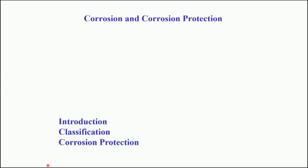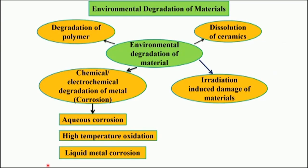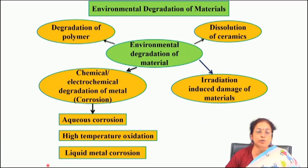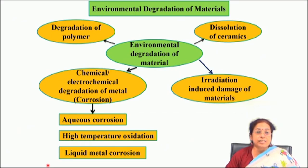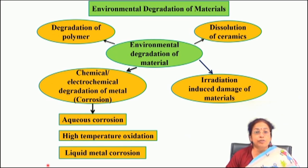Hello, we are going to start the degradation of materials because of corrosion and its protection. Corrosion is a kind of environmental degradation of materials. If you go through different types of degradation due to interaction with the environment, for polymers the term used is degradation, which occurs due to absorption of moisture or attack by UV radiation. For ceramics, there is dissolution or dissociation at very high temperature. There is also irradiation-induced damage, but for metallic materials the term commonly applied is corrosion, which is chemical or electrochemical degradation.